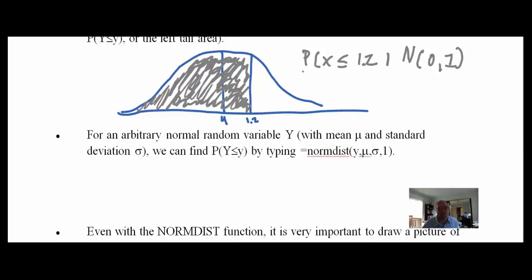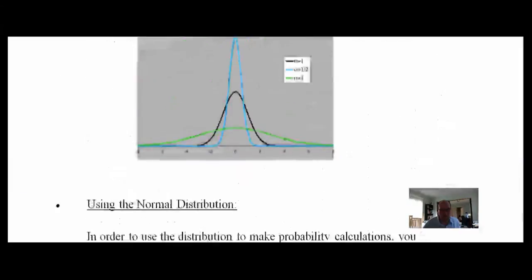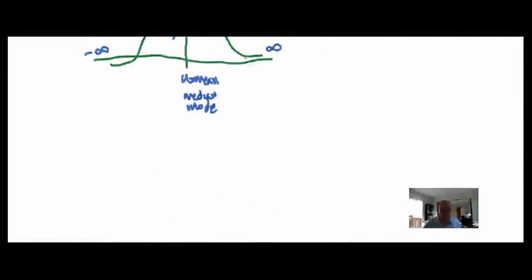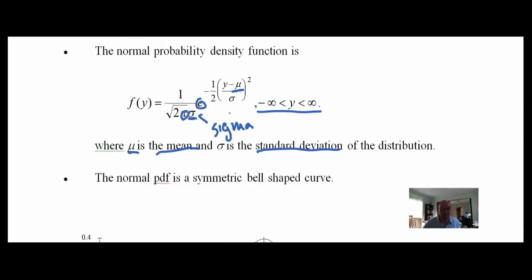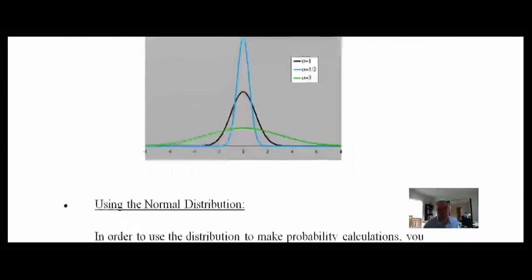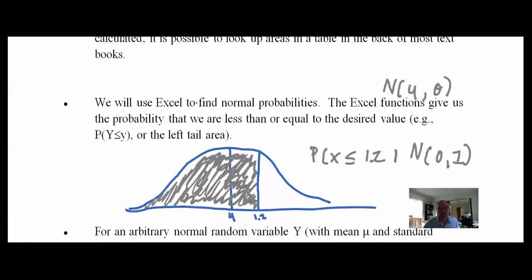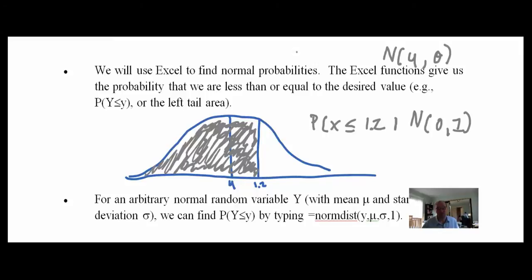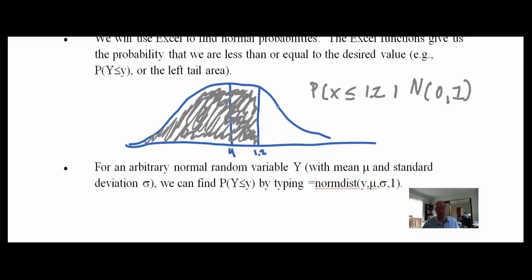By the way, what we're really doing here is taking the area under the curve — this is calculus. We're taking the integral of the PDF from two points: in this case from negative infinity to 1.2. This integral is hard to compute by hand, which is why values are printed in the back of every statistics textbook. Excel handles it for us, and doesn't even require us to convert to the standard normal.